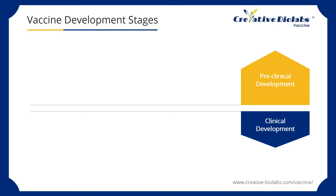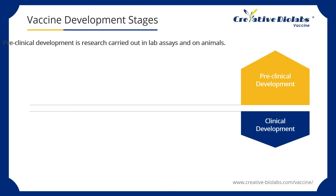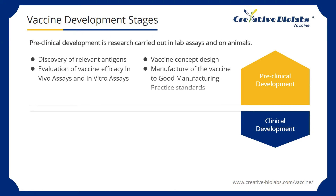The goal of vaccine process development is to develop a manufacturing process that can consistently produce a vaccine that is safe and efficacious. The development process of vaccines can be simplified into two broad stages: preclinical development and clinical development. Preclinical development is research carried out in lab assays and on animals. It includes discovery of relevant antigens, vaccine concept design, evaluation of vaccine efficacy in vivo and in vitro assays, and manufacture of the vaccine to good manufacturing practice standards.